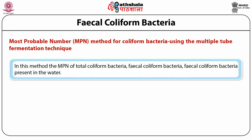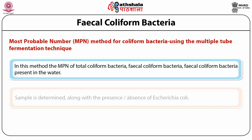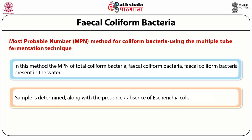In the MPN method, the most probable number of total coliform bacteria and fecal coliform bacteria present in the water sample is calculated, along with the presence-absence of Escherichia coli.